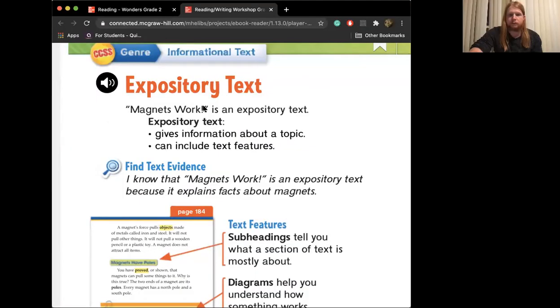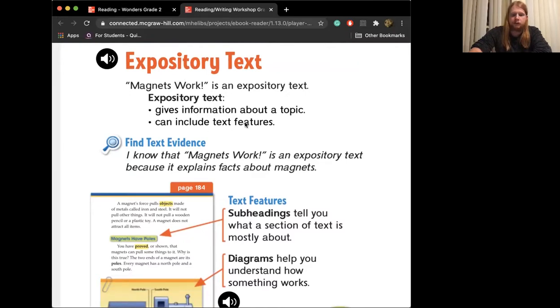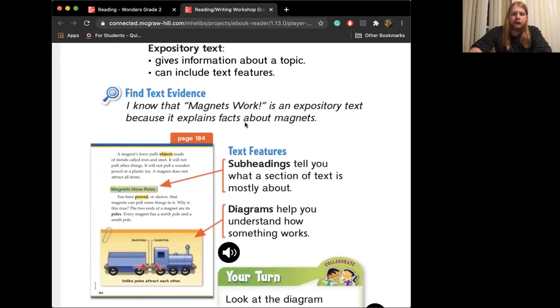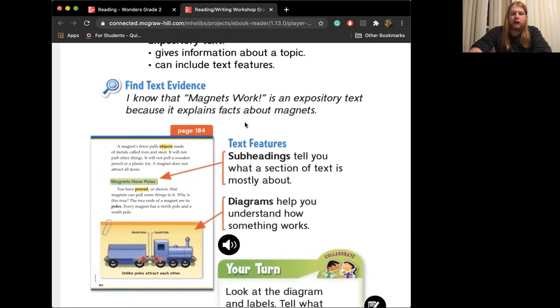The first thing I want to do is go over what an expository text is again. So I'm going to share my screen and we're going to look at Google Chrome. Here's expository text. Magnets Work is an expository text. So what an expository text does is it gives information about a topic and it can include text features. We know that Magnets Work is an expository text because it explains facts about magnets.